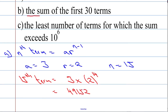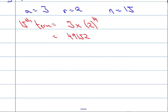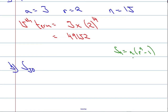Now I need to find the sum of the first 30 terms for part B. So part B, we're asked to find S of 30. We're going to remind ourselves of the formula: S of n equals A times R to the power of n minus 1 over R minus 1. If the value of R was particularly small we'd use the other formula, but as I said you can use either — it will always work.